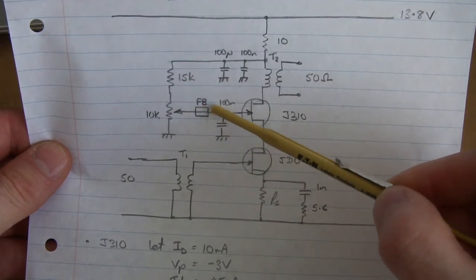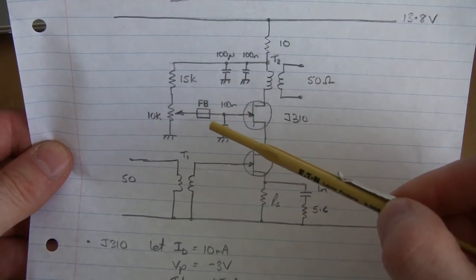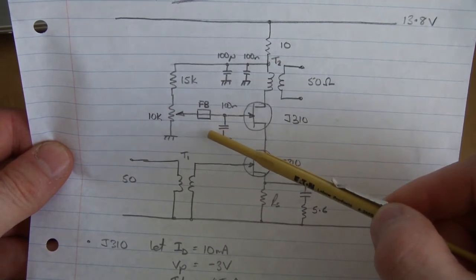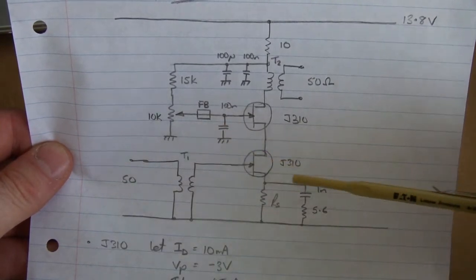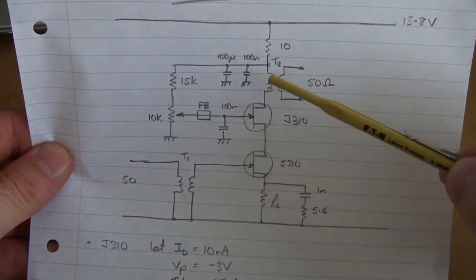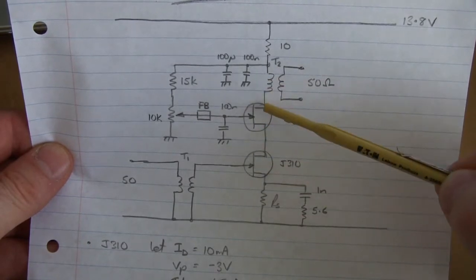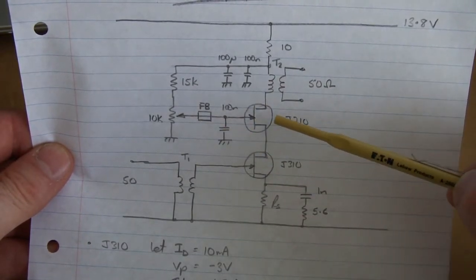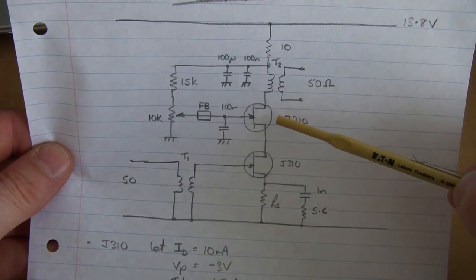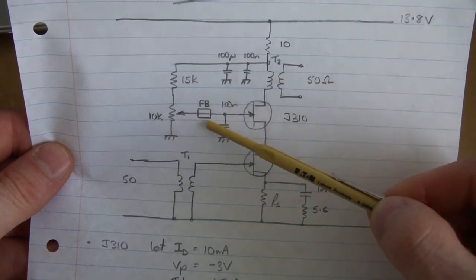That ferrite bead, again, was a recommendation in the design book. One of the authors, in playing around with a similar circuit to this, not the same as this one, but very similar, experienced some high frequency oscillations around 800 megs, and that was fixed by the insertion of this ferrite bead.